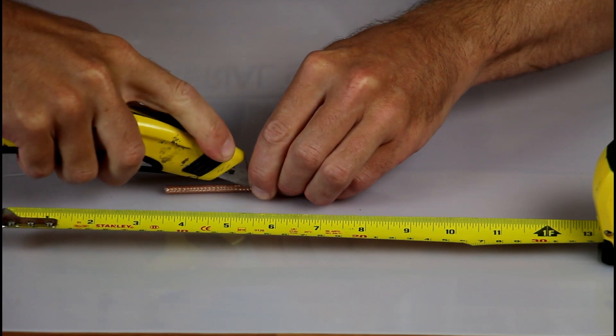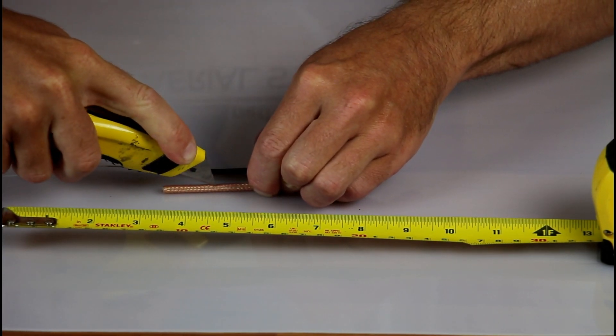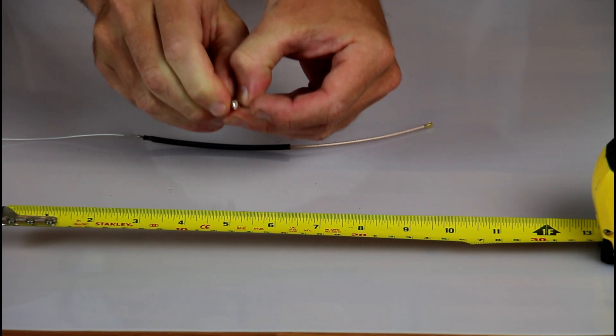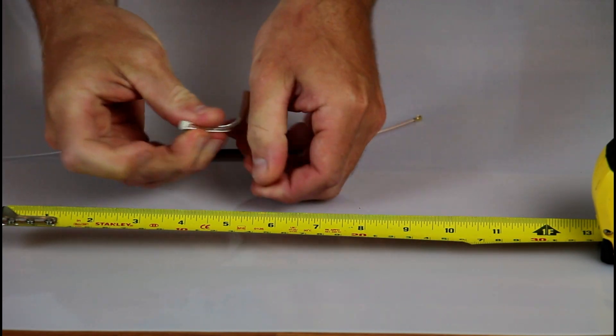Then you'll have to go ahead and strip the jacket off and for this I'm just using a knife. Once the jacket is sliced all the way down go ahead and remove the cable from the inside.